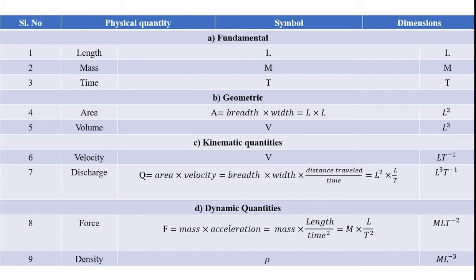Kinematic quantities can also be expressed with symbols and dimensions. For example, discharge can be expressed as area into velocity. Area is a geometric quantity expressed as breadth into width. Velocity can be expressed as distance traveled divided by time. Breadth is L and width is L, giving L squared.